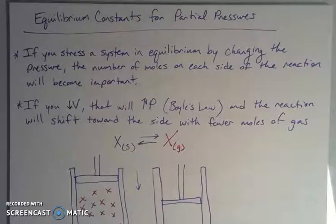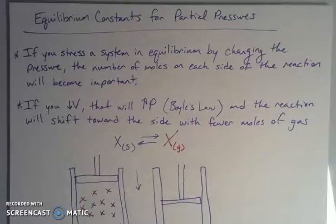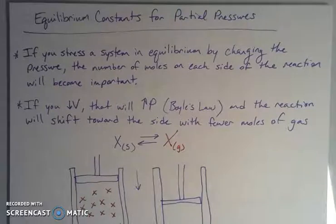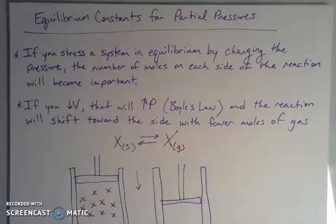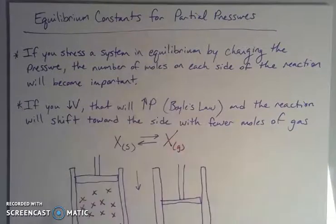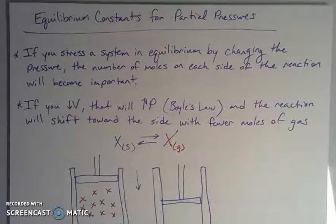Today I want to talk about equilibrium constants for gases. If we have a homogeneous equilibrium where all of the reactants and products are gases, we can talk about them in terms of concentration — that's the equilibrium constant K sub C. But we can also talk about their partial pressures, and that applies to heterogeneous equilibria as well. Anything involving gases as reactants or products can be described using another version of the equilibrium constant.